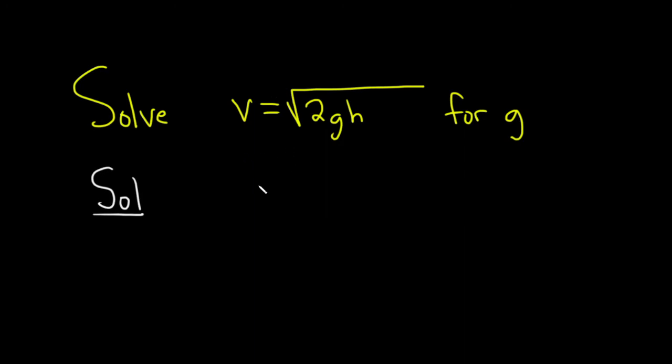So the first step is going to be to just write it again. v equals the square root of 2gh. And again, we're looking for little g.